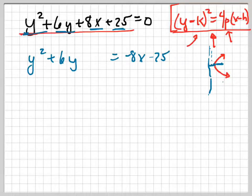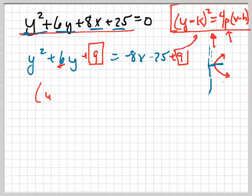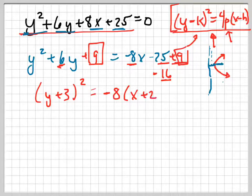Now I'm going to complete the square by adding 9 to both sides, because that's half of 6 squared. So I get y plus 3 squared equals negative 16. So factor out a negative 8 out of here, and I get negative 8 times x plus 2.